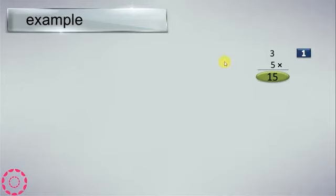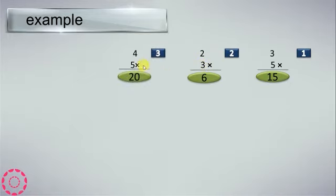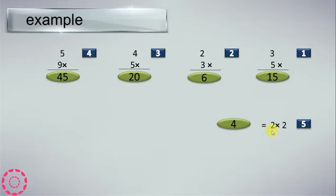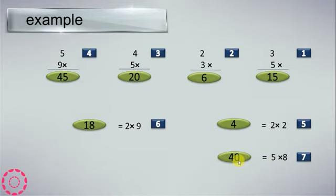We have examples. 3 multiplied by 5 equals 15. 3 multiplied by 2, or 2 multiplied by 3, equals 6. 4 multiplied by 5 is 20. 5 multiplied by 9 is 45. 2 multiplied by 2 equals 4. 9 multiplied by 2 equals 18. 8 multiplied by 5 equals 40. We have 5 multiplied by 5 equals 25.